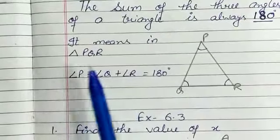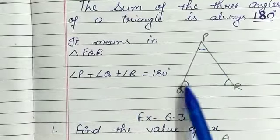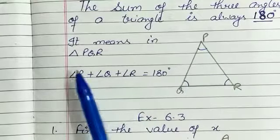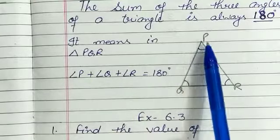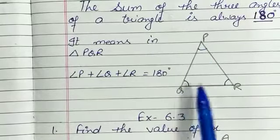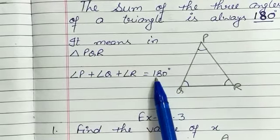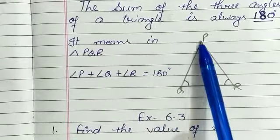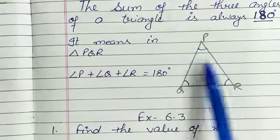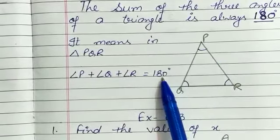It means that in triangle PQR, angle P plus angle Q plus angle R is equal to 180 degrees. The sum of a triangle's 3 angles is always 180 degrees.